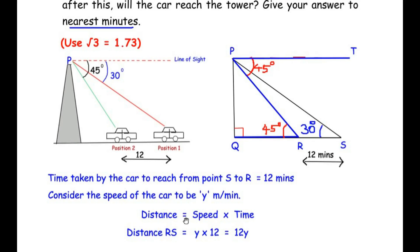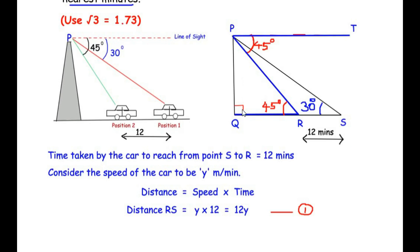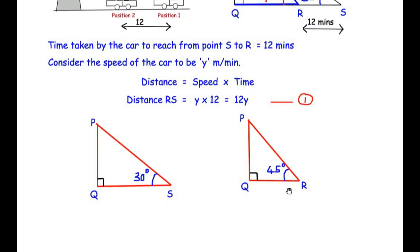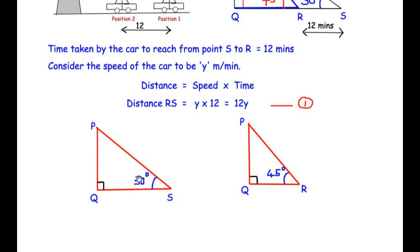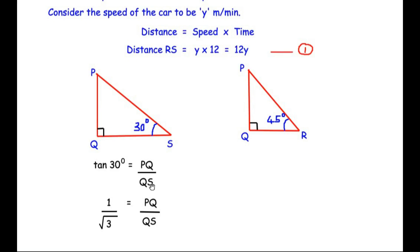Next, let us break down the figure into two right-angle triangles: triangle PQS and triangle PQR. For triangle PQS, tan 30° equals opposite over adjacent, which is PQ over QS. Tan 30° is a standard angle with value 1 over √3, so 1/√3 = PQ/QS. Cross-multiplying gives QS = √3 × PQ. This is equation 2.